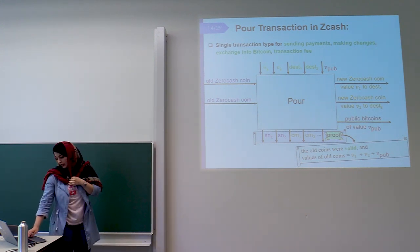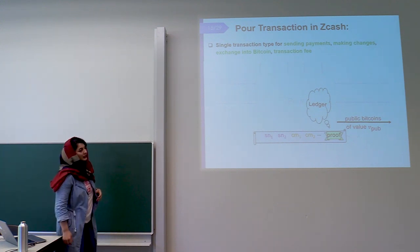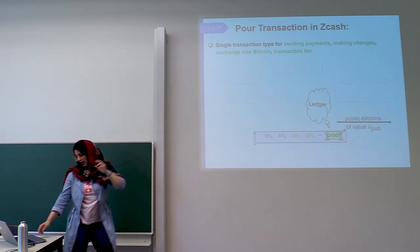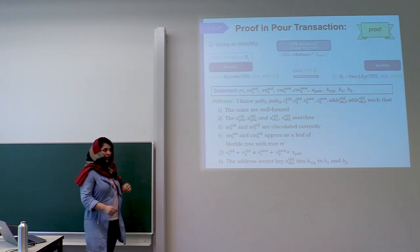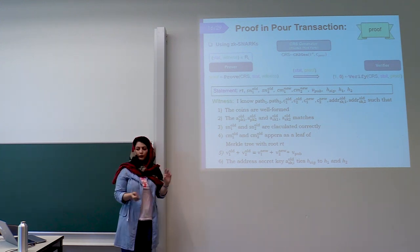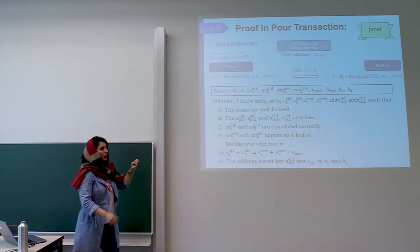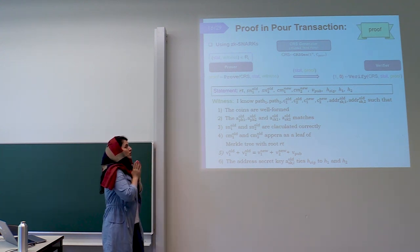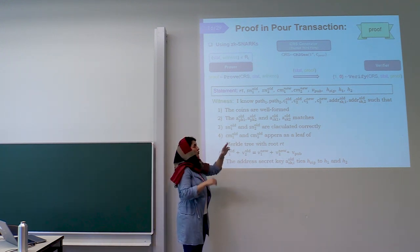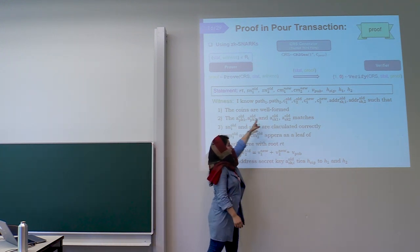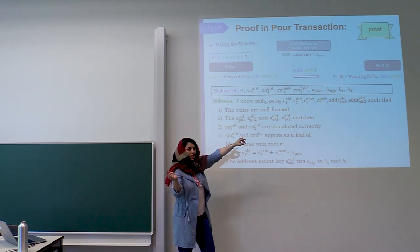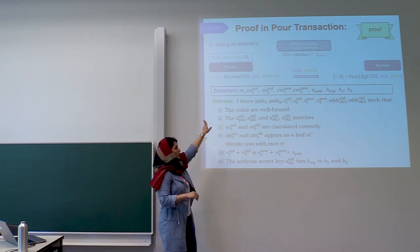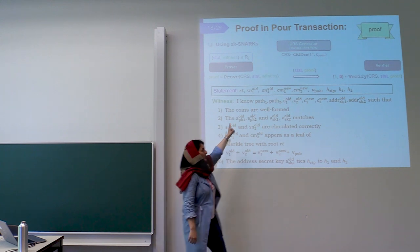Here you can see the highlighted information which goes into the ledger. Let's see the proof in more detail. In this proof, the prover wants to give a proof that she knows some secrets — for example, she knows the authentication path and the old coins and everything. She wants to give a proof that she knows these secrets for those public values, such that all these computations have been done correctly.